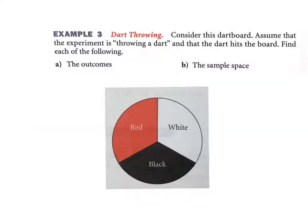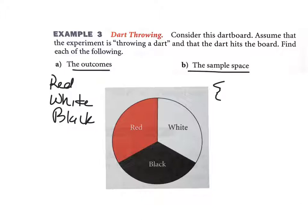Dart throwing. Consider this dart board. Assume that the experiment is throwing a dart and that the dart hits the board. Find each of the following. What are the outcomes? Well, the outcomes are you'd either hit red or white or black, that's all that could happen. Now what they're trying to get you to see here is this word right here: the sample space is exactly the same as all the outcomes. So the sample space, we've got it usually in brackets. I'm just going to use the letters red, white, and black.